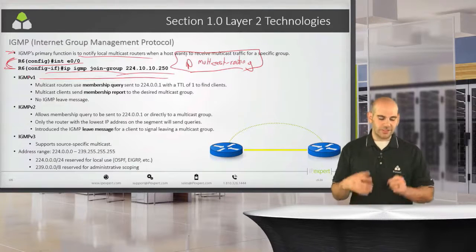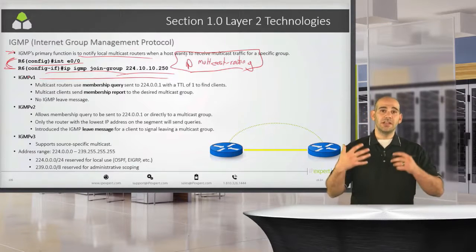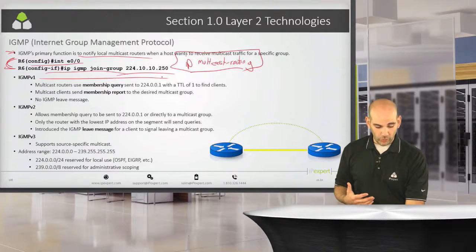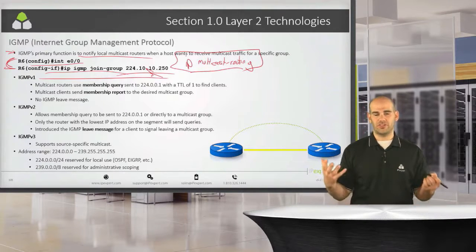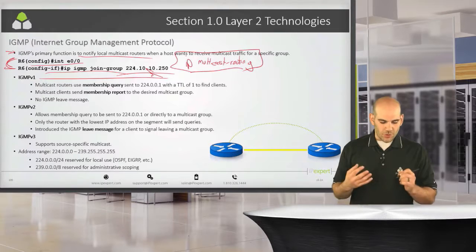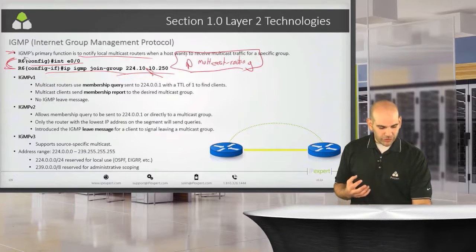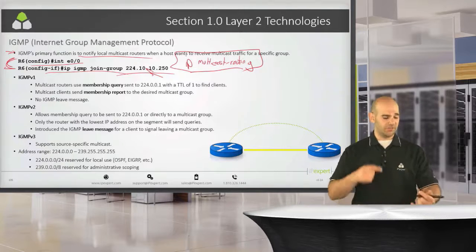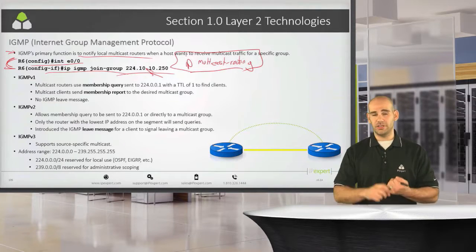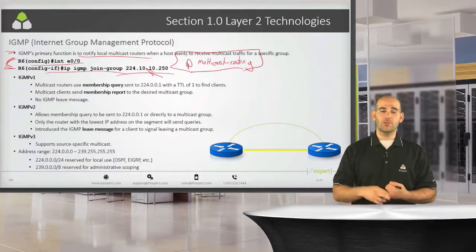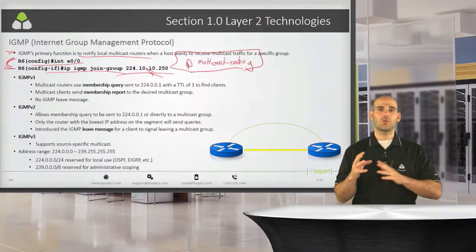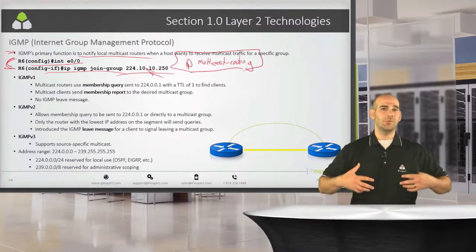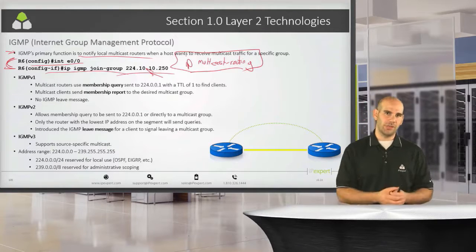This is how we're going to tell the device that we want to receive traffic sent to a particular address. IGMP is going to have three different flavors. What we need to know about these three flavors is how to change the version, what features they offer, and how they operate — so we know which version of IGMP to implement if asked in our lab exam.